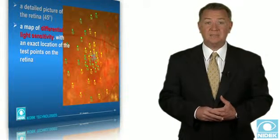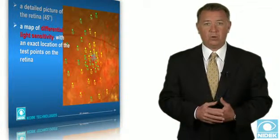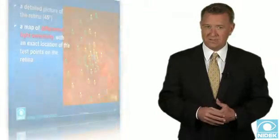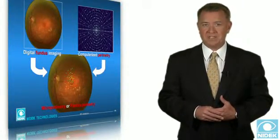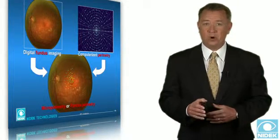Microperimetry is an innovative diagnostic technique that was developed to overcome such limitations of the traditional technique. The sensitivity map is generated by observing a live picture of the examined retina and therefore allows referring stimuli location to precise anatomical references.